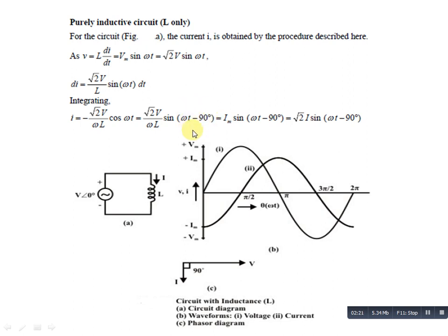Current lag हो रहा है inductive के case में। Final equation आ गई: I = Im·sin(ωt - 90°), यानी current 90° से lag कर रहा है और voltage lead कर रहा है। यहाँ Im = √2·I, क्योंकि Irms = Im/√2 और Vrms = Vm/√2 — cross multiply करने पर value आ जाती है।